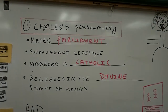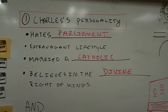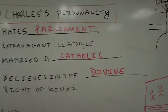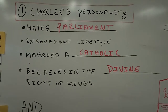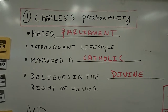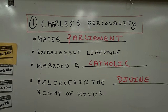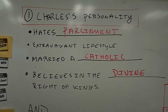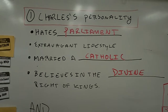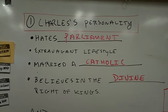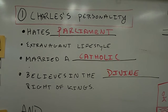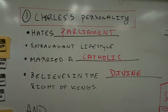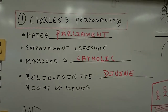First of all, we said there are several causes of the English Civil War. Number one was Charles I's personality. For instance, he hated Parliament — any time he could rule without it, he would choose not to. He also lived an extravagant lifestyle, which the people disliked: lots of paintings, lots of gold, lots of jewelry — bling, as you guys would say today. And he did something horrible: he married a Catholic. If you remember from Bloody Mary's reign, we know that people did not want Catholics on the throne in England and didn't want to see Catholicism brought back.